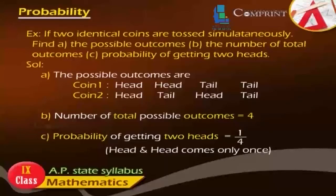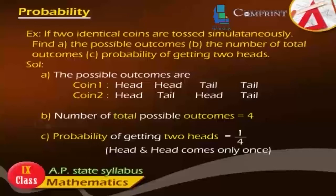Example: If two identical coins are tossed simultaneously, find: A. the possible outcomes, B. the number of total outcomes, C. the probability of getting two heads. The probability of getting two heads is equal to 1 by 4, since head and head comes only once.